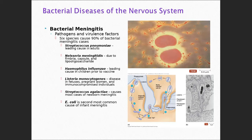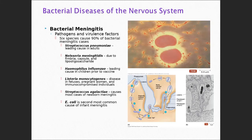Neisseria meningitidis has about an 80 to 85 percent mortality rate. If you get it, the likelihood you won't survive is great unless you have the vaccine. There is a vaccine for meningococcal meningitis — it's the one vaccine that everybody going to high school or especially college, between the ages of 16 through 20, must have or have a waiver. It is so communicable that people can get it just by touching each other through mucous secretions. This is law in Texas.